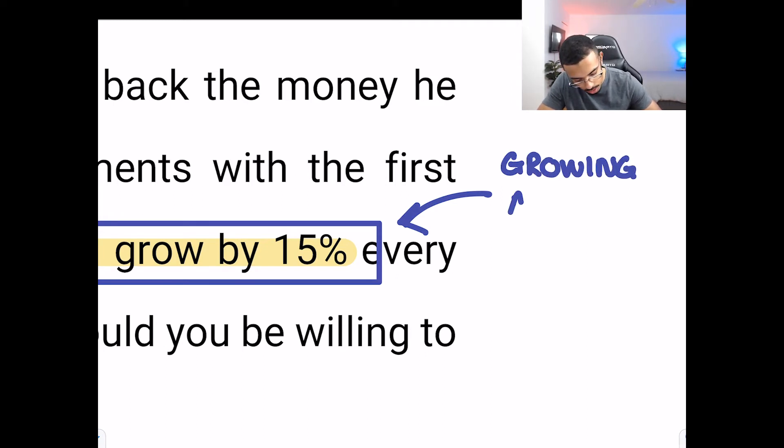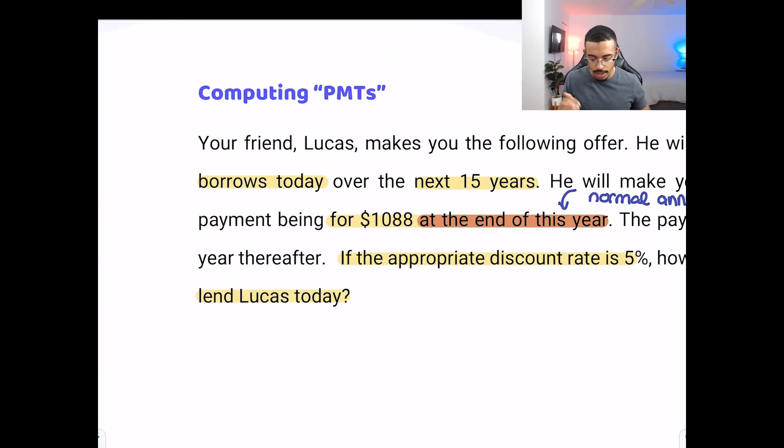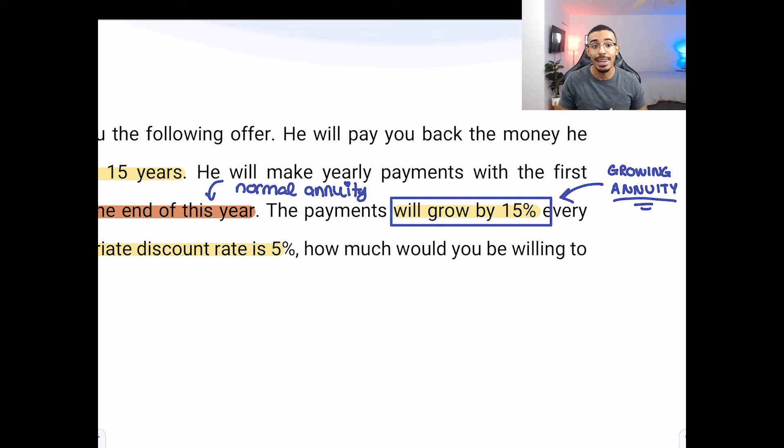Now we know because of this part right here it's totally obvious to us. We're dealing with a growing annuity. Once we know this, the steps become really straightforward. It's all about plugging it in within our function, plugging it in within our timeline, and trying to get a better sense of what we're seeking. What we're seeking is how much you would be willing to lend Lucas today, knowing all these different factors. We're going to identify the function for a growing annuity, identify the different elements within that function, and solve for our answer step by step together.